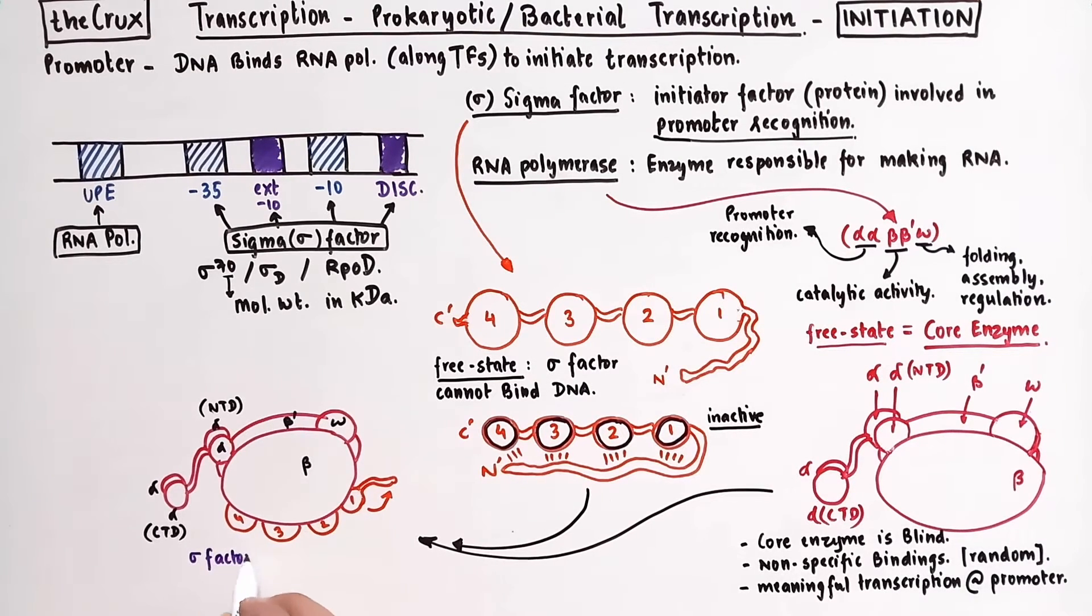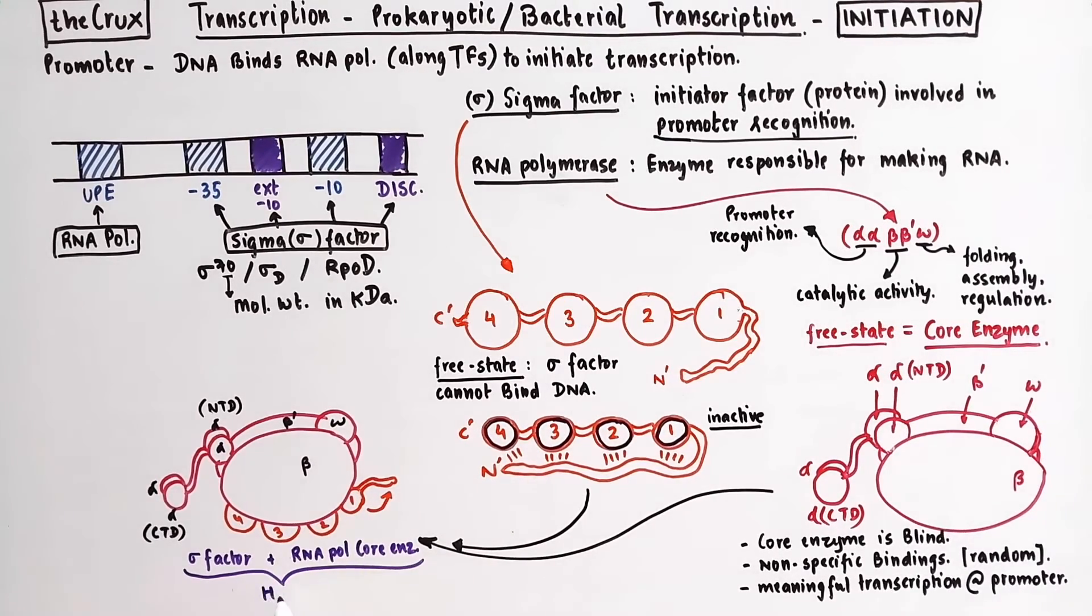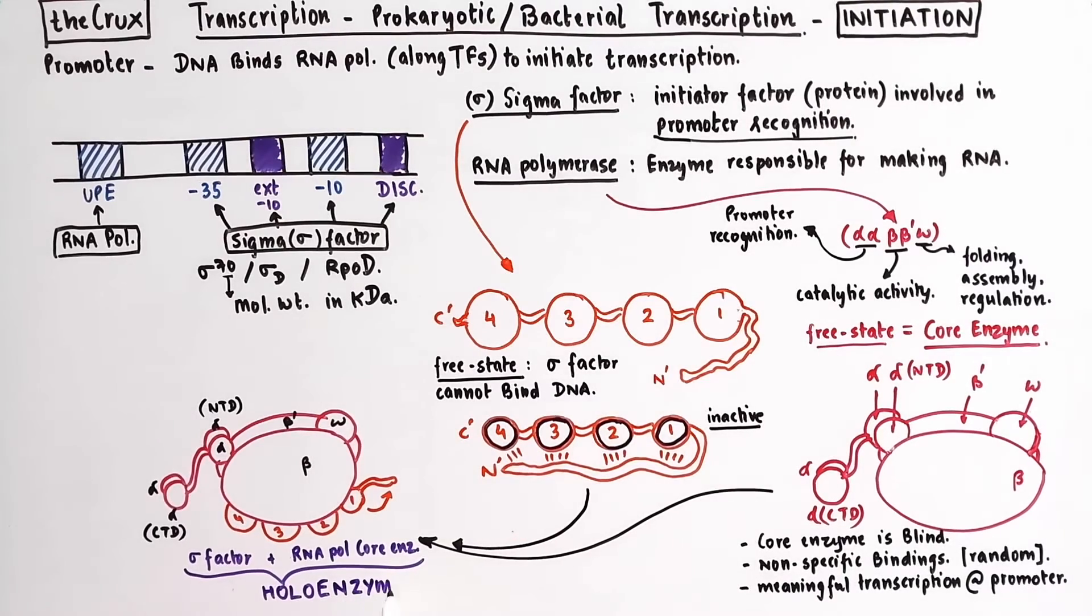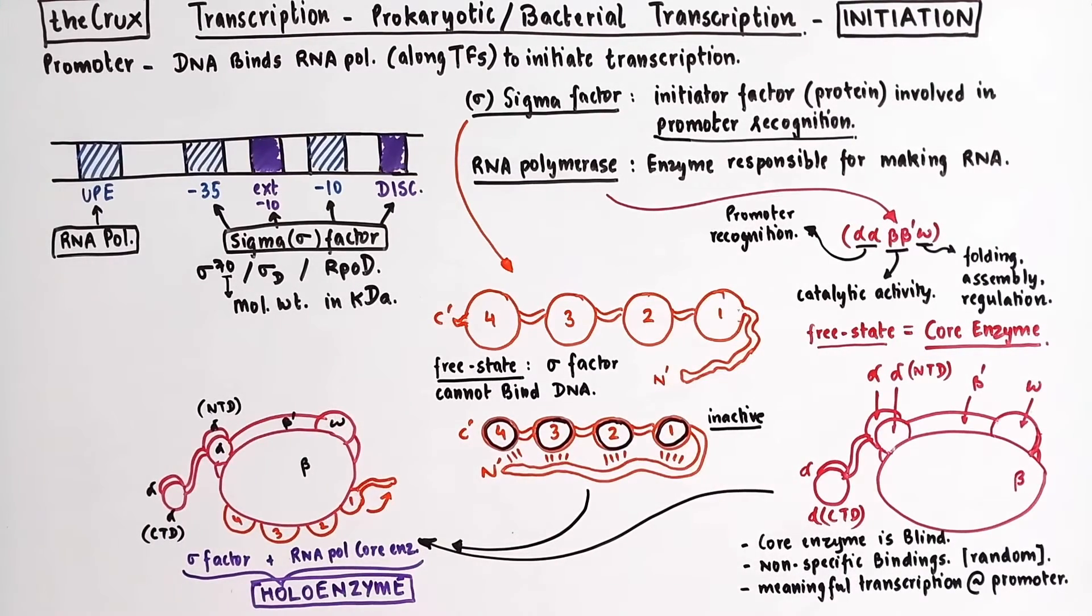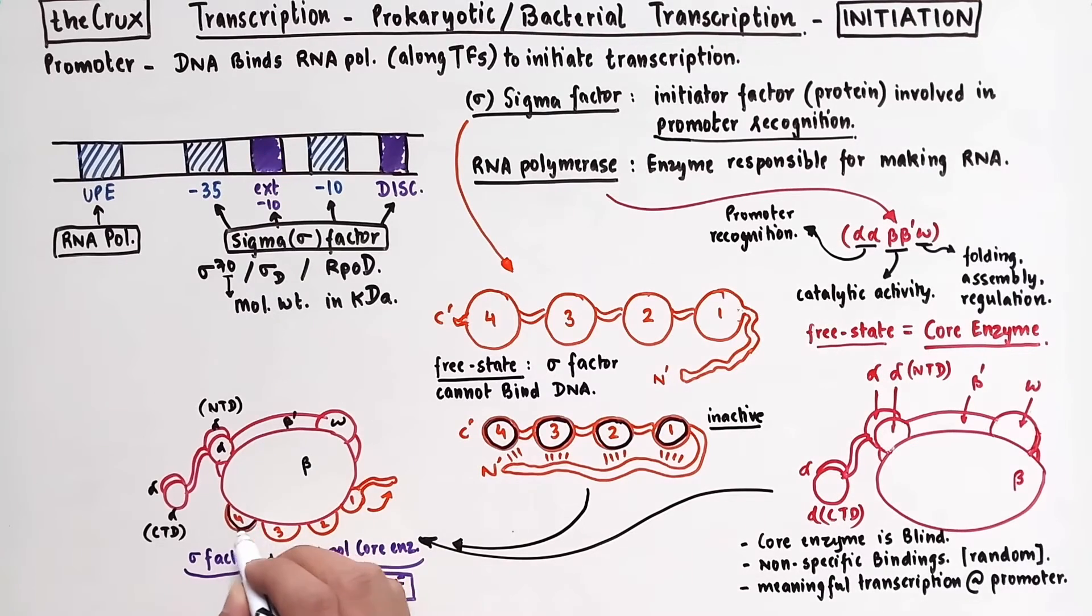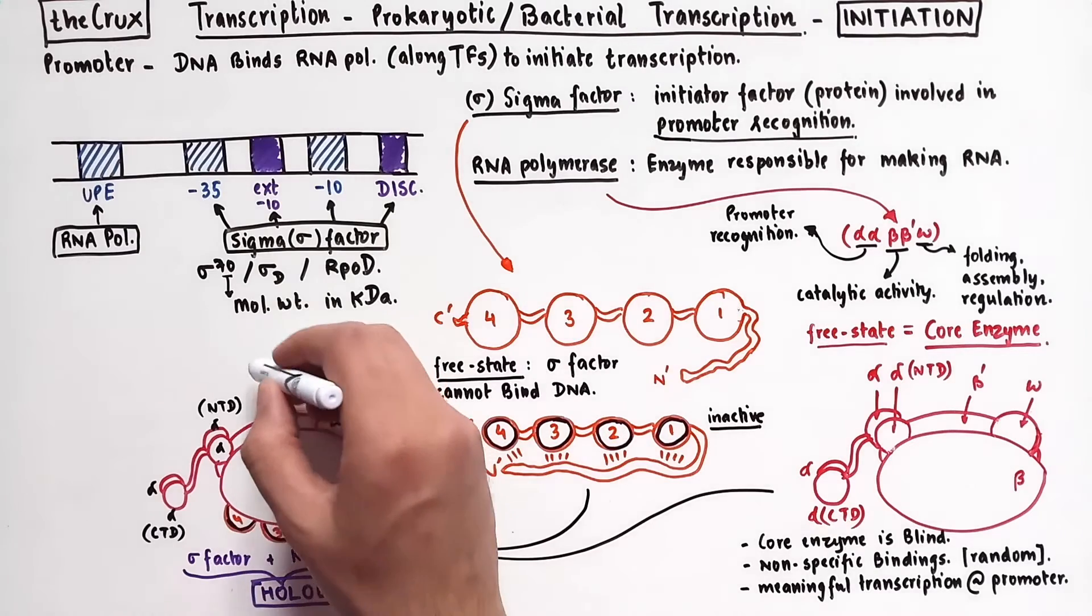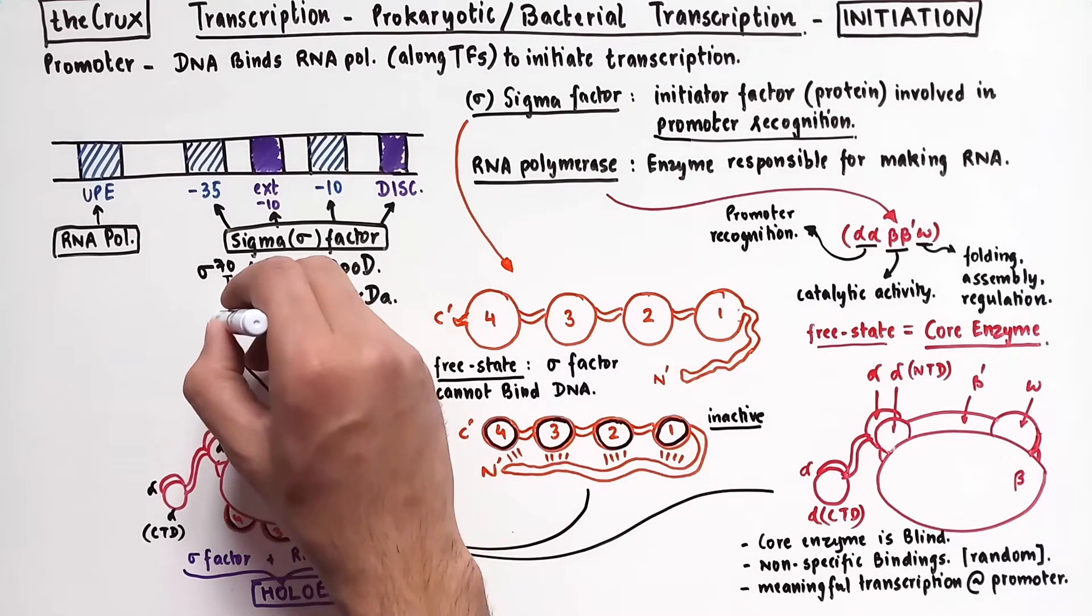Importantly, this complex of sigma factor and RNA polymerase core enzyme is called holoenzyme, which is the catalytically active form of the enzyme RNA polymerase. And notice that the DNA binding domains of sigma factors are not embedded within the enzyme, but are exposed to the outside in this holoenzyme. Now this complex can bind to the promoter.